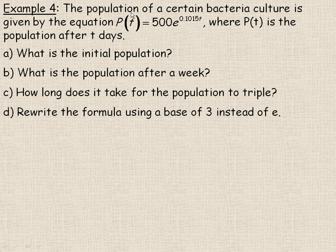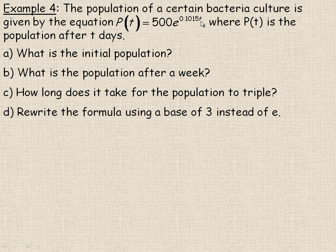So in this example, the population of a certain bacterial culture is given by this equation. P is the population at time T, where T is the time in days. It's 500 times E to the power of 0.1015T.